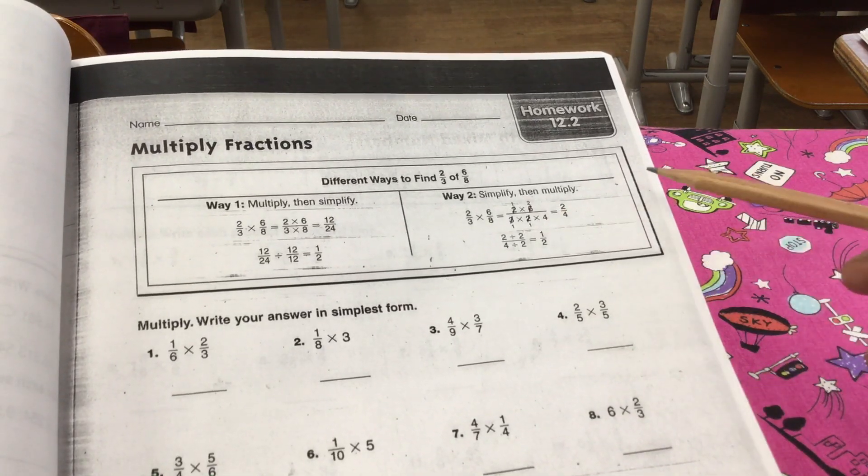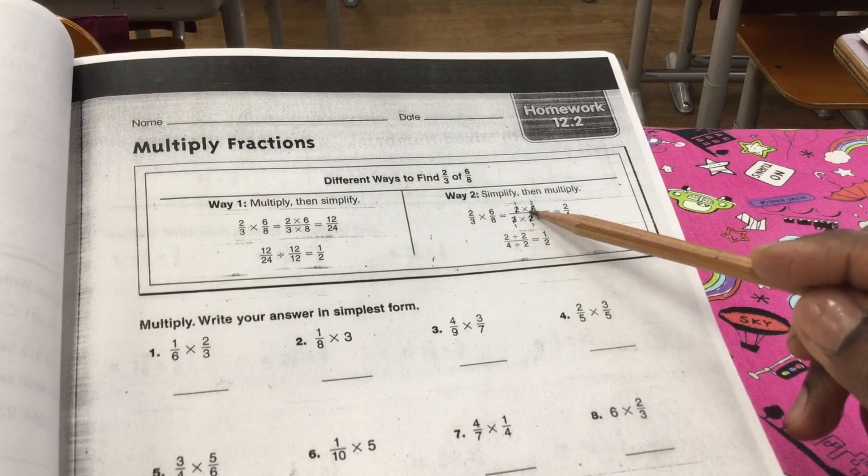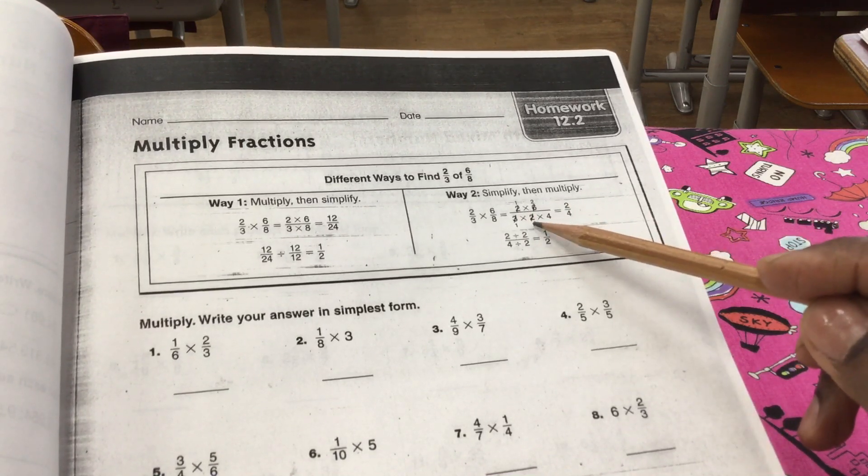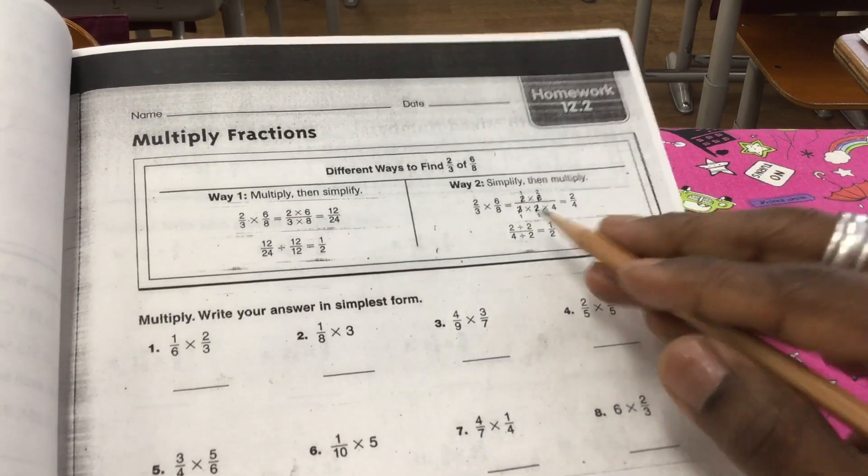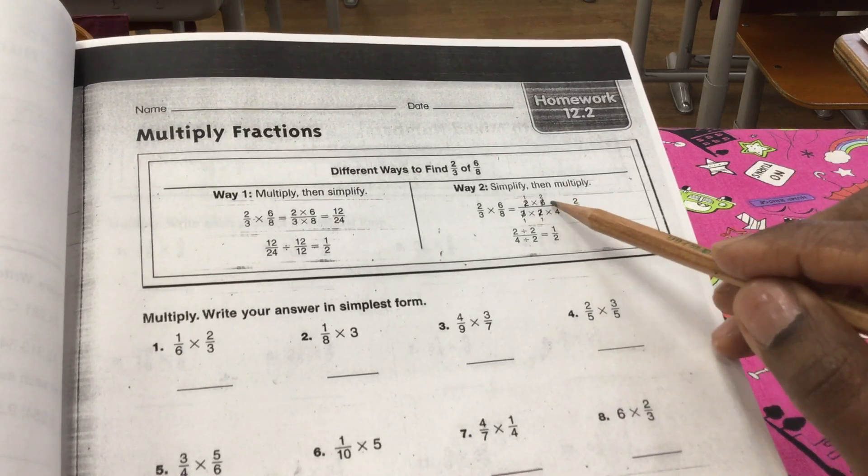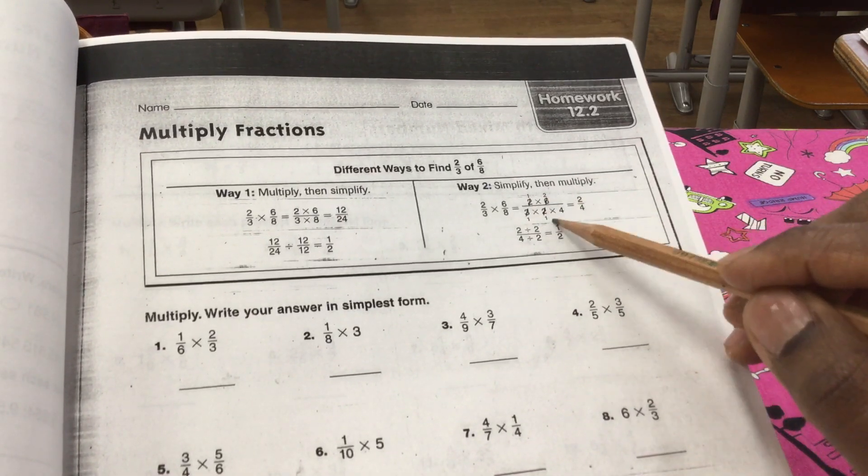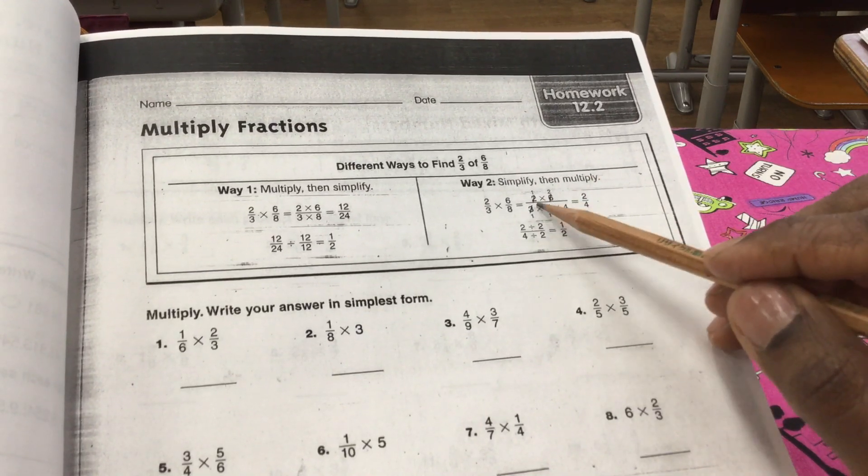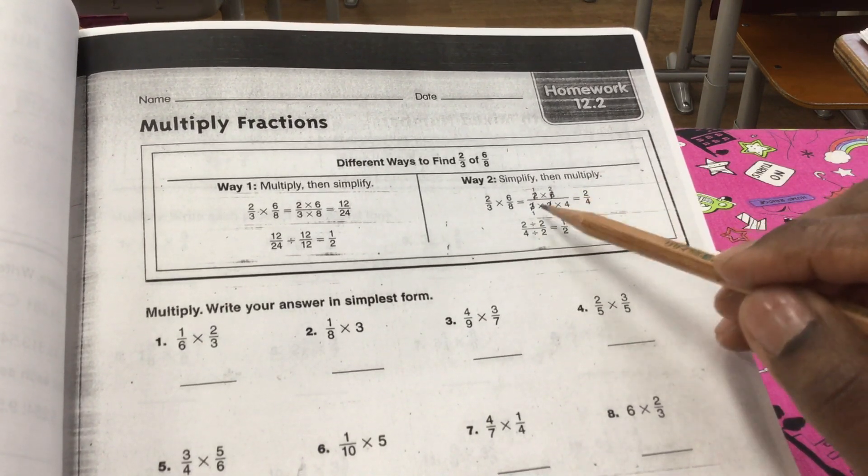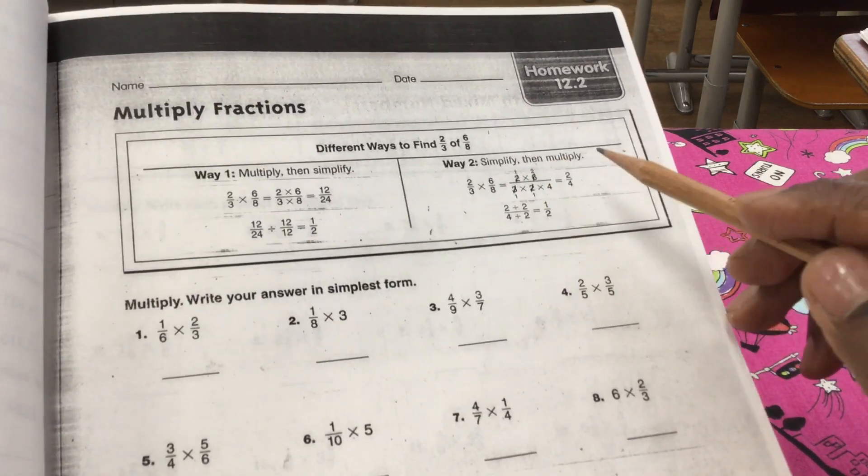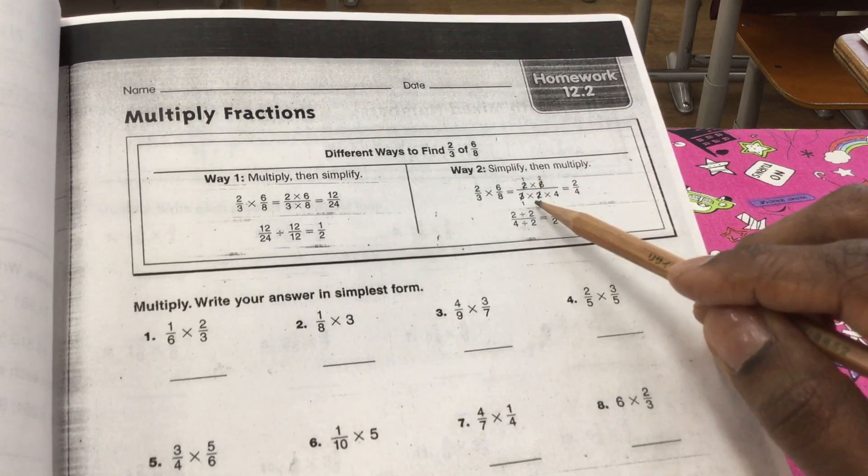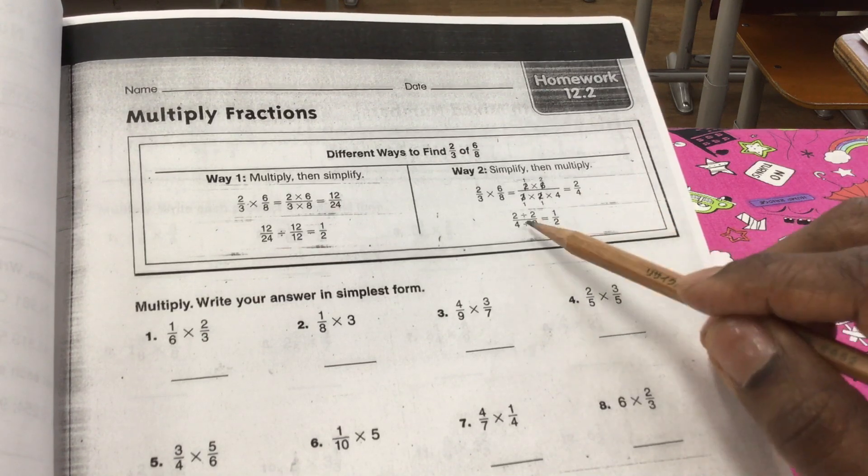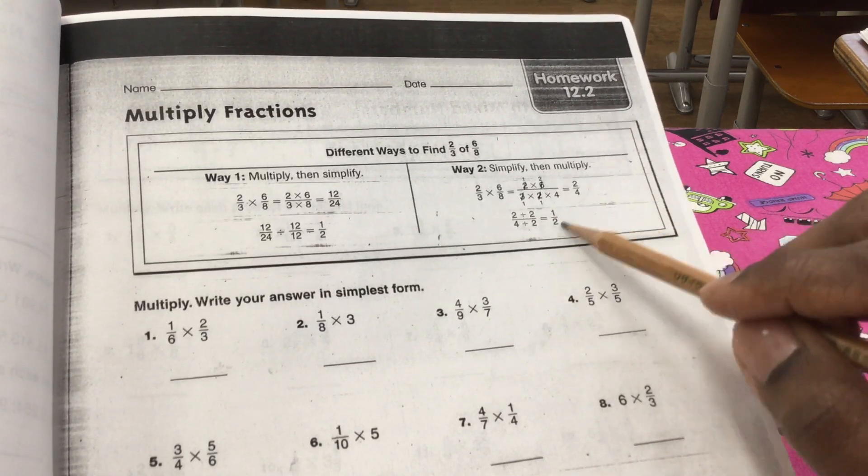You can go to way number two. Simplify first, then multiply. So, we have two times six over three times two times four. We'll do our factors. Then you cross-cancel. Two into two, one and one, and then you can divide three into six. That gives us a one. That gives us a two at the top. Do your multiplication. One times two is two. One times one times four is four. Two-fourths can be simplified into one-half. And there you have it.